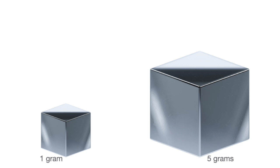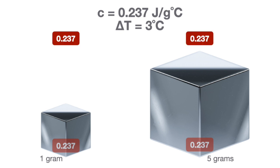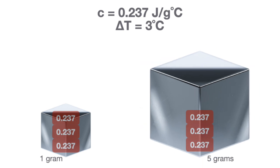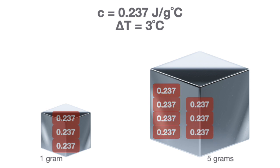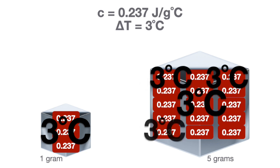Now suppose we have 1 gram of silver and 5 grams of silver. Because they're both silver, they both have a specific heat of 0.237 joules per gram per degree Celsius, and we want to increase the temperature of both by 3 degrees Celsius. As each mass absorbs 0.237 joules of heat energy, it will increase by 1 degree Celsius. However, the larger mass has much more space, and since heat dissipates throughout, it lessens the effect of the temperature change. The 5 grams of silver would have to absorb 5 times the amount of heat before increasing entirely by 3 degrees Celsius.